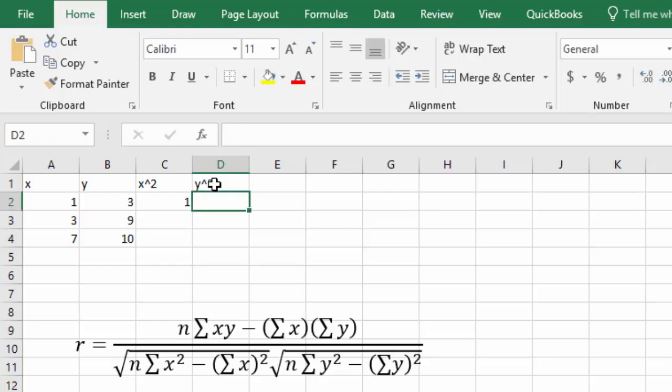Same thing for y squared. I can say equals, click the y, shift 6, and then a 2 to square it, and I get the 9.